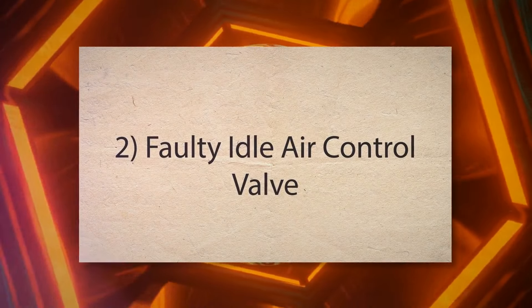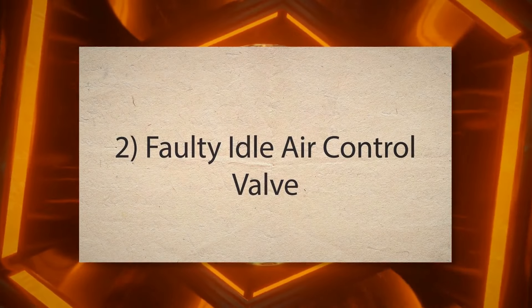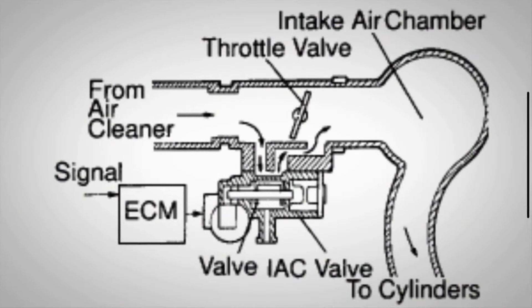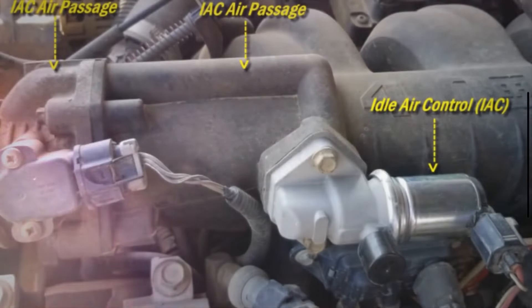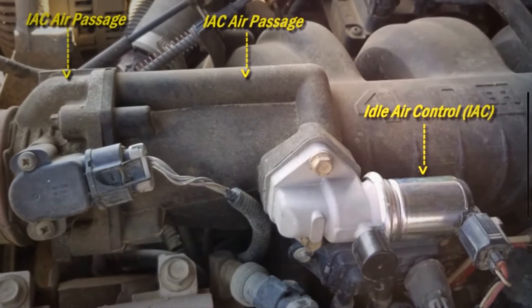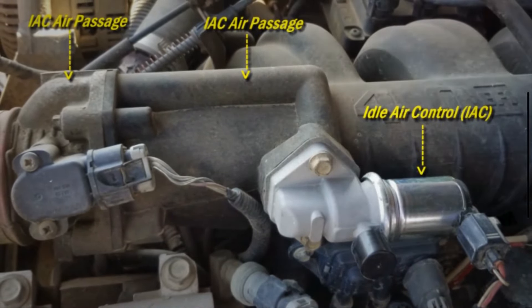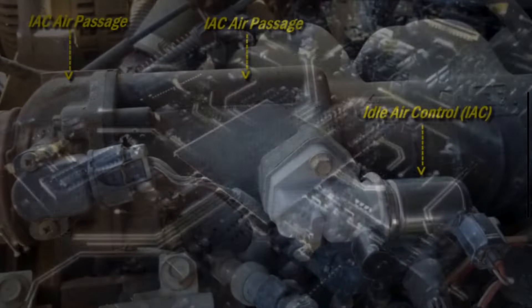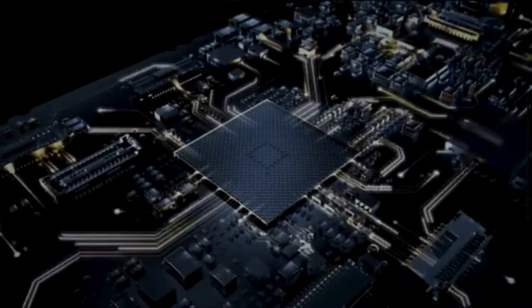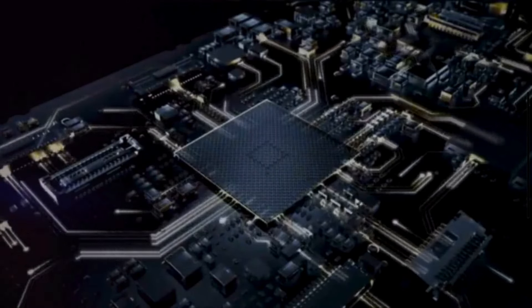2. Faulty Idle Air Control Valve. The IAC valve regulates the amount of air bypassing the throttle plate to control idle speed. If it's dirty or malfunctioning, it may not respond correctly to the ECM's commands. This causes the engine to idle erratically.